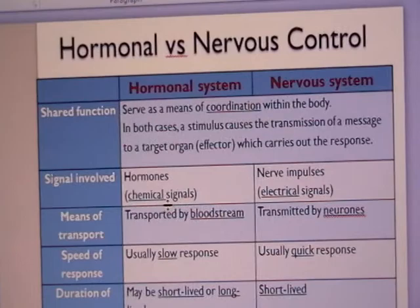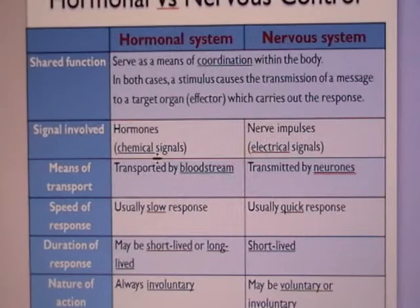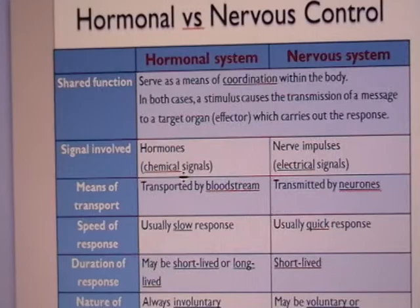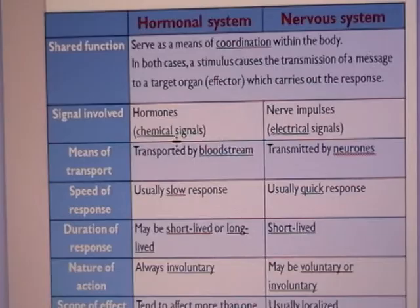For the hormonal system, the signal involved will be hormones or chemical signals, whereas for the nervous system we are talking about electrical signals in the form of nerve impulses. For the means of transport, the hormonal system involves transportation by blood, whereas for the nervous system it is via neurons.